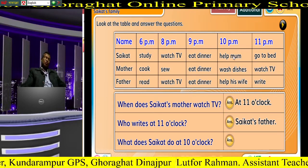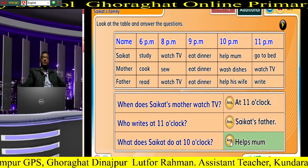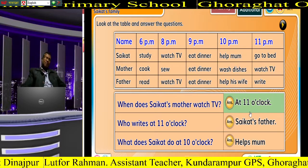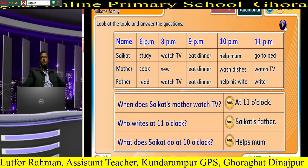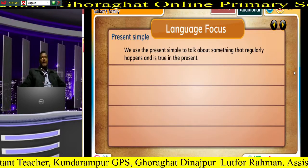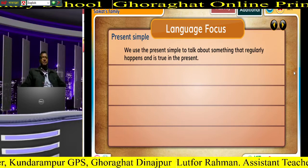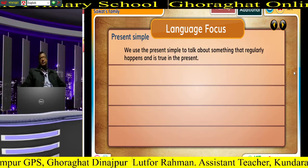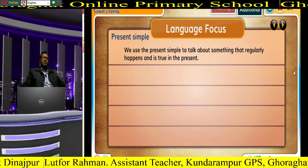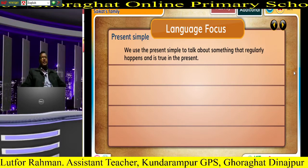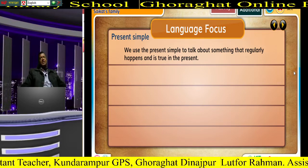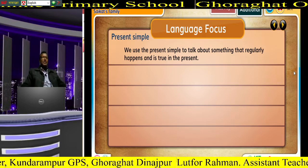We use the present simple to talk about something that regularly happens and is true in the present. We use the present simple to talk about something that regularly happens and is true in the present.